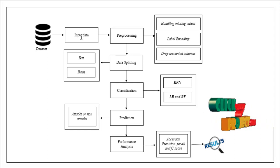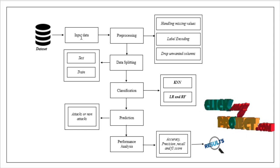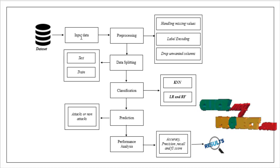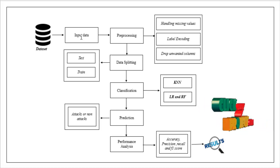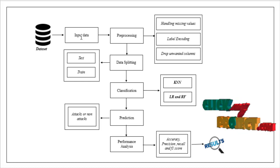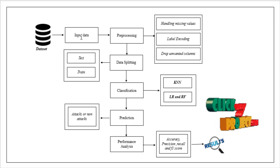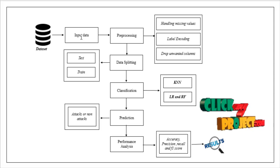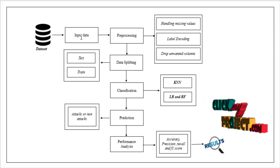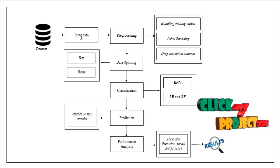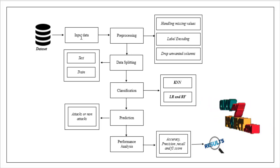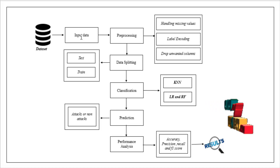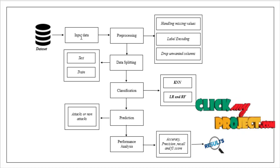After label encoding, we drop unwanted columns — any unnecessary columns that are not required in the process. The next module is data splitting, where we split the input data into test and train sets. The test data is used for predicting the model, and the train data is used for evaluating the model.